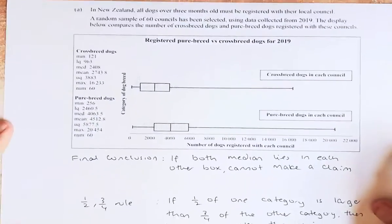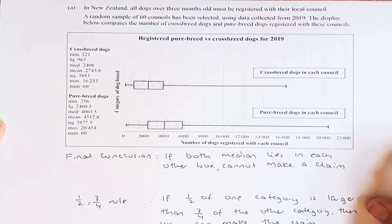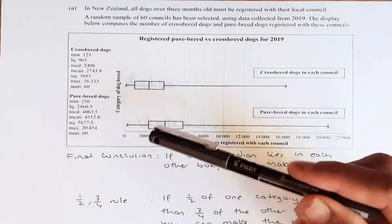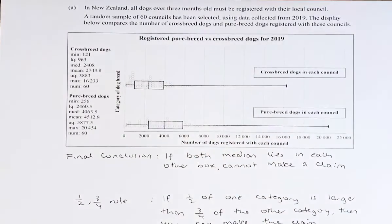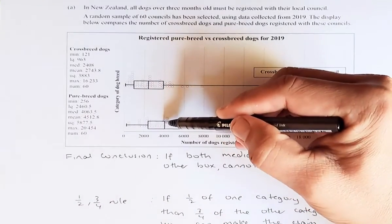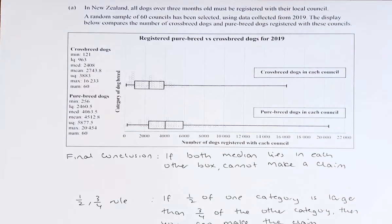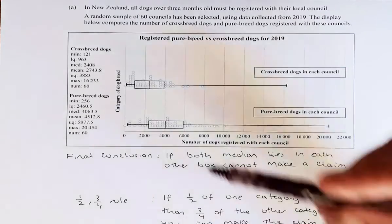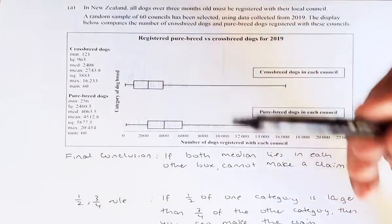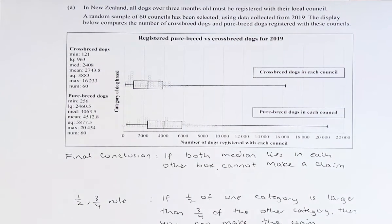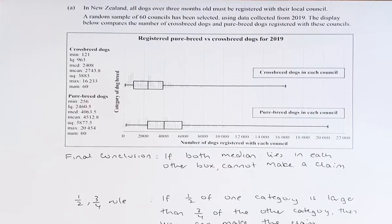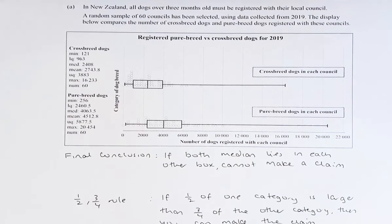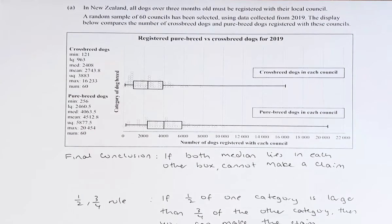Finally, the overall conclusion is based on whether the median of one group lies inside the other group's box. If both medians lie inside each other's box, then we cannot claim that one has a bigger number than the other. This is confirmed by the half-three-quarter rule: if half of one category is greater than three-quarters of the other category, then we can make the claim that registration in one category is bigger.